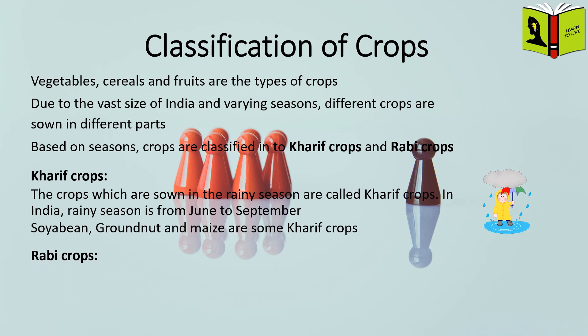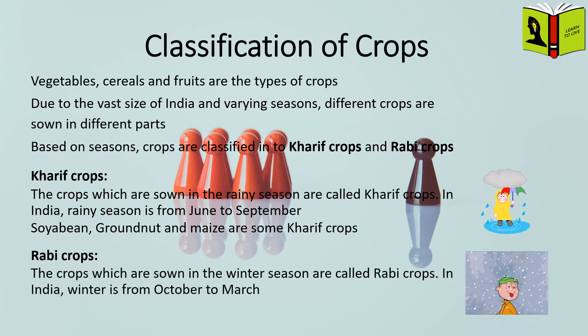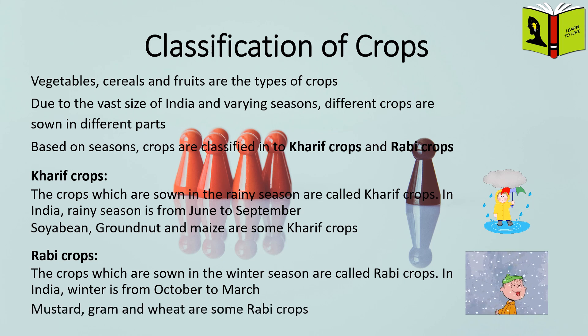Rabi crops. The crops which are sown in the winter season are called Rabi crops. In India, winter is from October to March. Mustard, gram, and wheat are some Rabi crops.